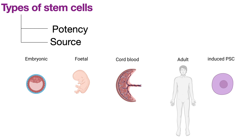Adult stem cells reside in tissues in a quiescent state and are extremely rare, ranging from multipotent stem cells like hematopoietic to unipotent like muscle cells. They are very difficult to isolate, but they give rise to patient-specific stem cells which reduce many problems when delivering cell therapy.